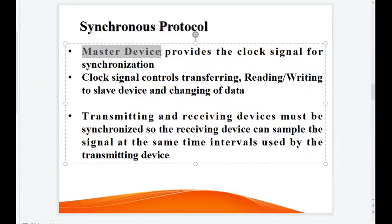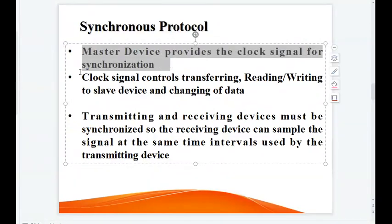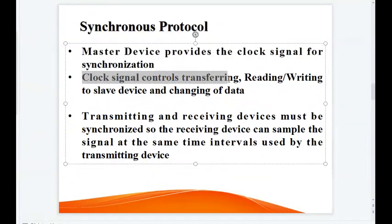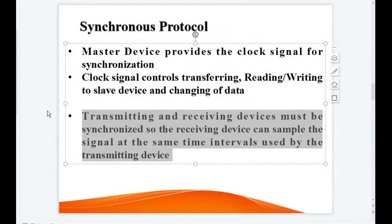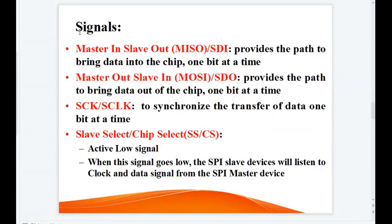The master device provides the clock signal for synchronization, and the clock signal controls transferring, reading, writing to the slave device, and changing of data. The transmitting and receiving devices must be synchronized so that the receiving device can sample the signal at the same time intervals used by the transmitting device.